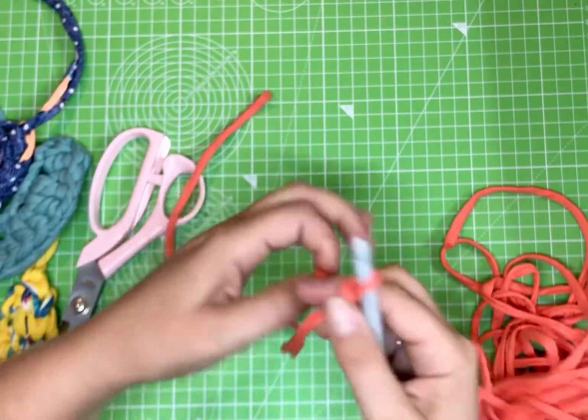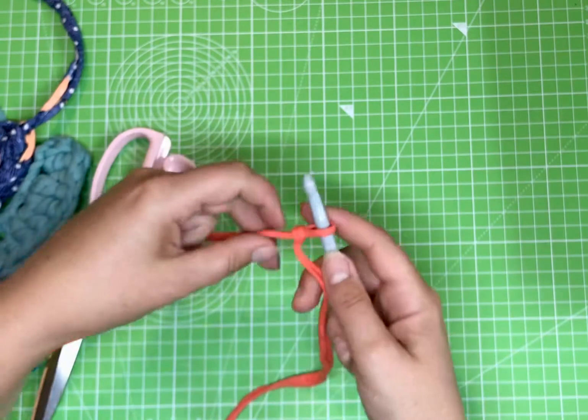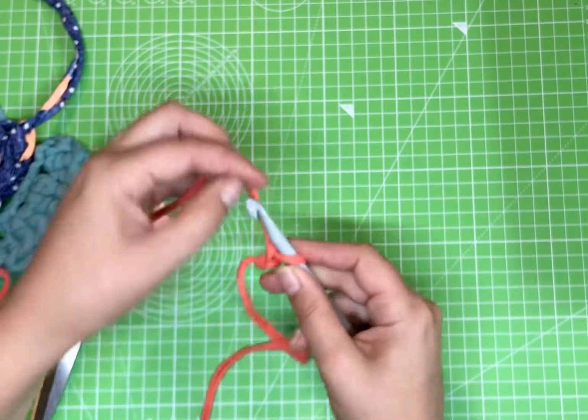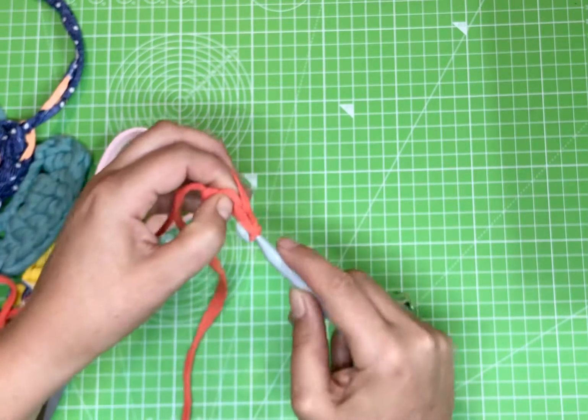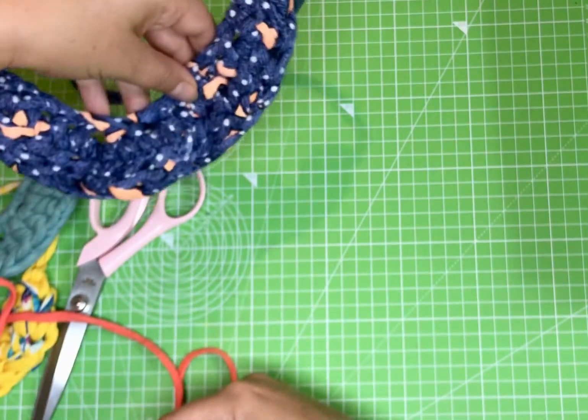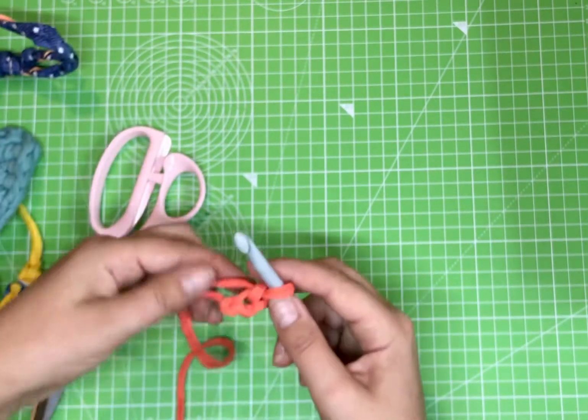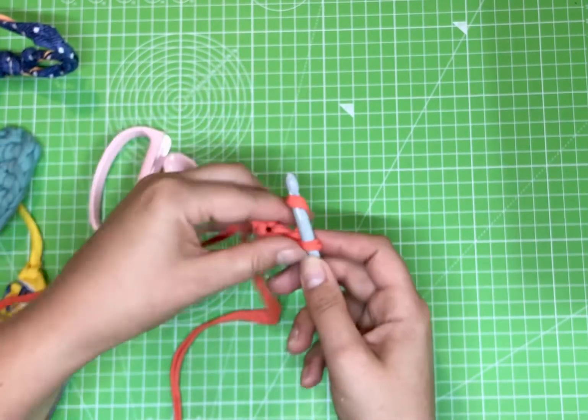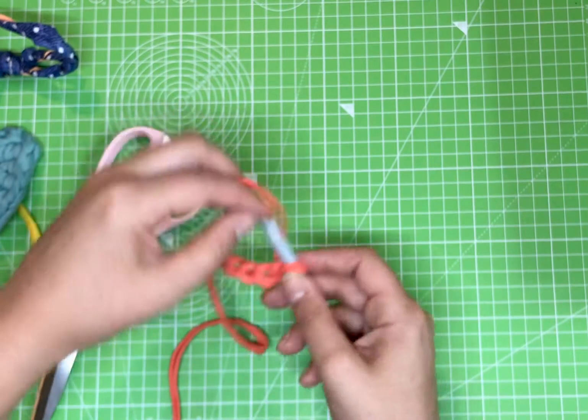Pop that onto your hook and then do 12 chains is what I've been doing. Now, I don't know if you've seen this one. This one's particularly chunky, this rope, so you may want to just go for 10 chains. It just depends on your preference and how it looks.